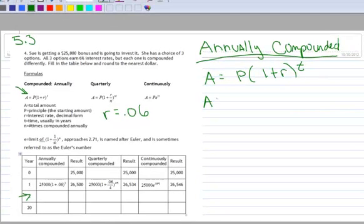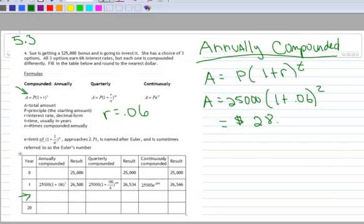So A now is 25,000, parentheses, 1 plus .06, and I'm going to raise that to the second power. And if you do those calculations, you will find that she's going to end up with $28,090. And I'm just going to round it off to the whole dollar here just for space reasons. But you would typically carry this out to two decimal places.